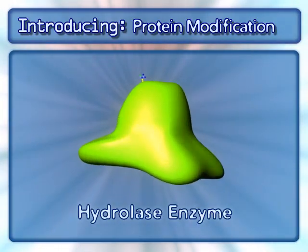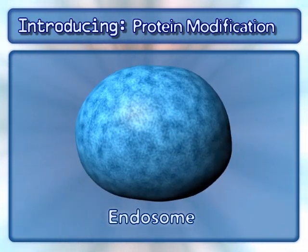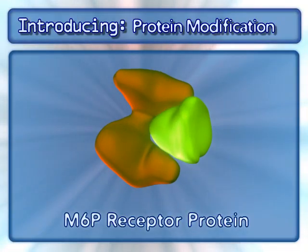Hydrolases are enzymes that degrade other molecules. The endosome is an organelle that contains molecules to be degraded. Other key components include the M6P receptor protein.